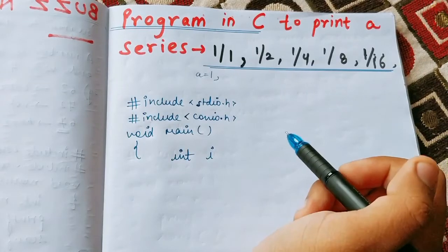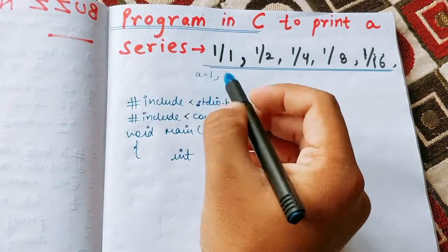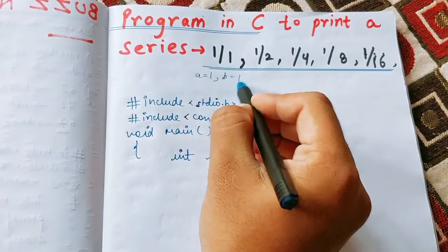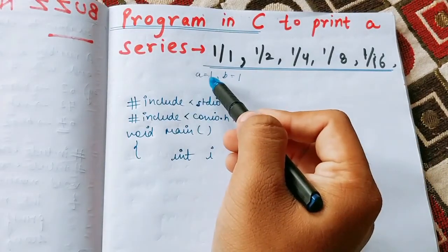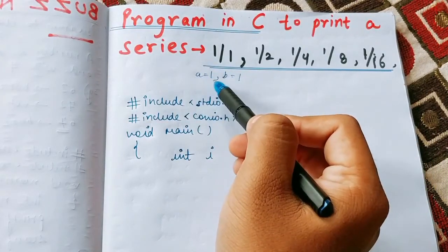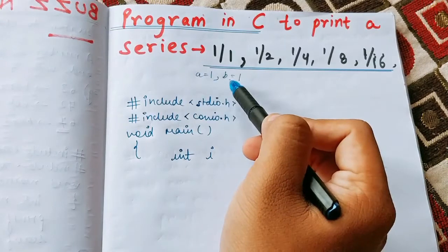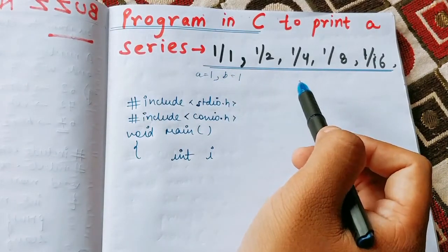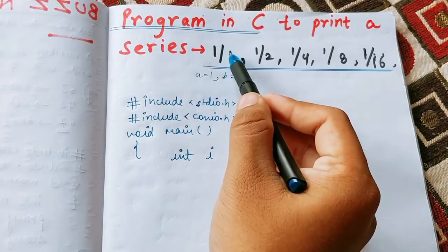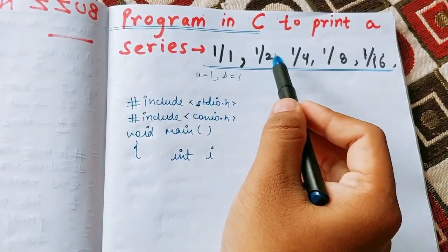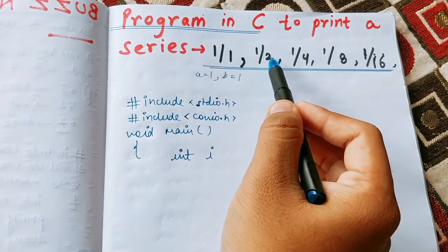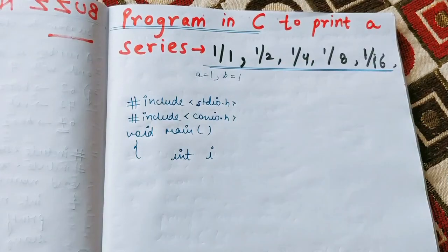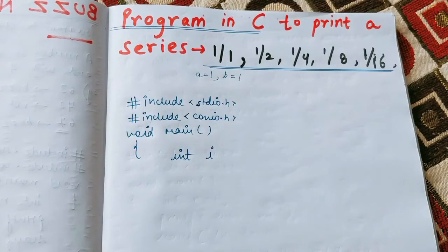We'll initialize two variables: a equal to one and b equal to one. We'll print the value of a, and a will remain one throughout — we won't change it. We will change the value of b in every iteration by doubling it. So if b equals one, in the next step b becomes two, then four, and so on. That's the basic introductory idea.